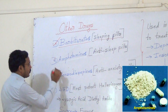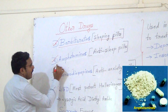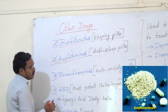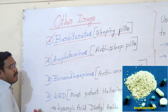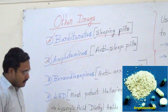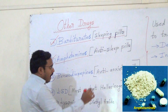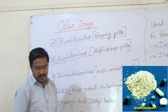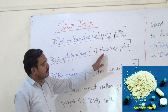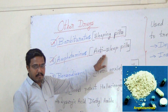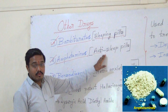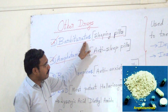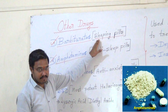The second one is amphetamines. These are anti-sleep pills. If you take amphetamines, you don't get to sleep. But if you take barbiturates, you get to sleep. So anti-sleep pills are nothing but amphetamines.